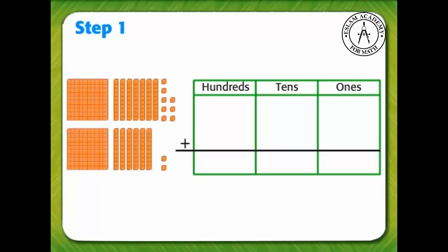Now that we have the numbers modeled, we can add the ones. Add 8 and 2. There are now 10 ones, but we cannot write 10 in the ones place. Write 0 in the ones place and bring the 1 above the tens.